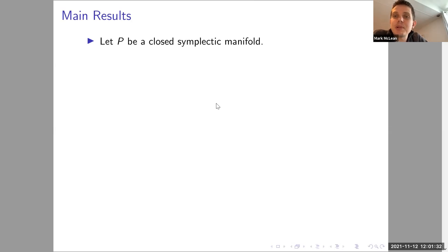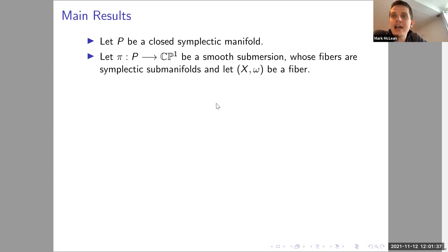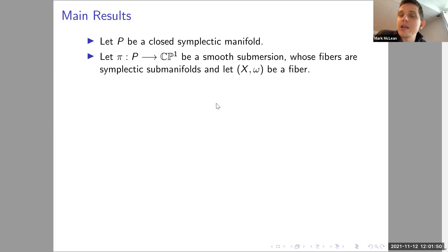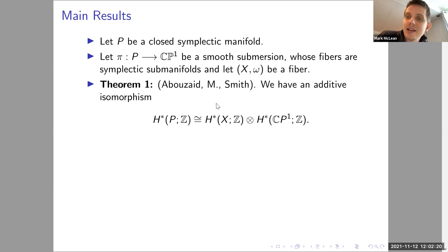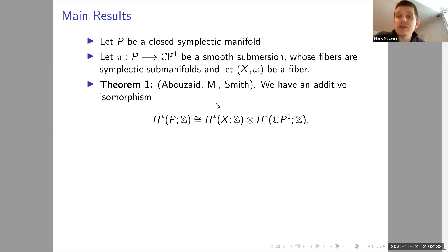We start with a closed symplectic manifold P and a smooth submersion whose fibers are symplectic submanifolds, submersing to CP1. We choose a fiber, say the fiber of 1, and let that be a symplectic manifold X. Our main theorem is that the cohomology of P is the same as the cohomology of the corresponding trivial fibration, i.e., it's trivial as a fibration over Z.